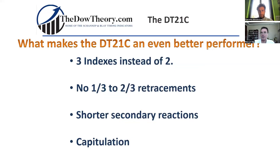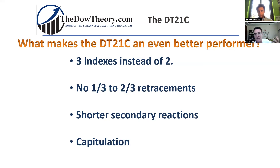So then we have to ask: you have shown in previous slides that it works, that we have greater performance, that we have greater reduction. But then comes the question — why? What makes the DAO theory for the 21st century an even better performer? And I think this is because of four things; there are four issues.